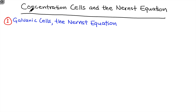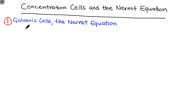The title of this experiment is Concentration Cells and the Nernst Equation, and it really focuses on electrochemistry and the conversion of chemical energy into electrical energy. The basic idea of electrochemistry is that we can take the chemical energy of a redox reaction and convert it into electrical energy in the form of a voltage and/or a current.